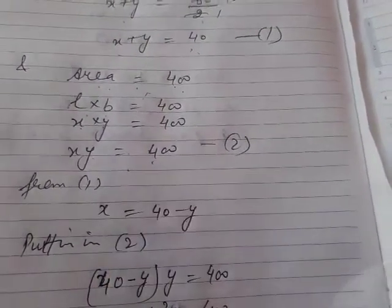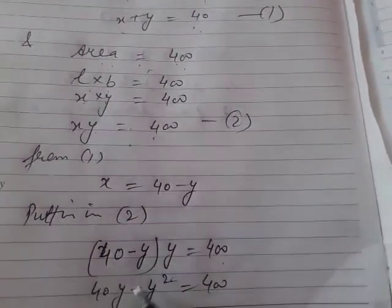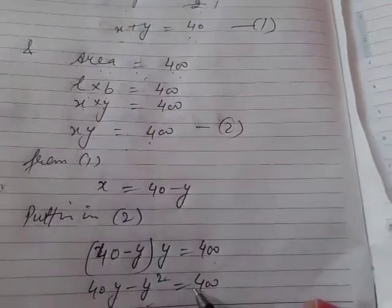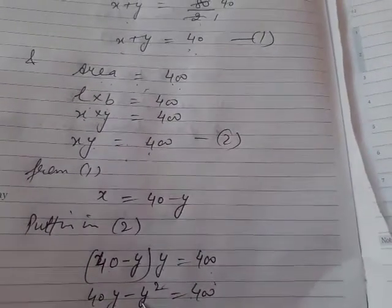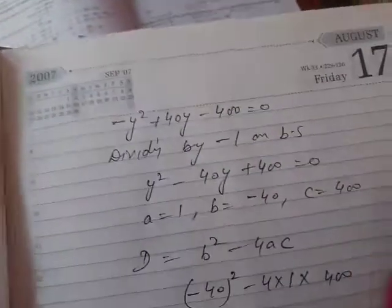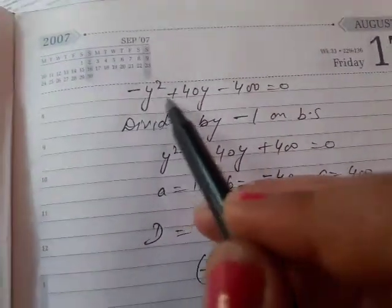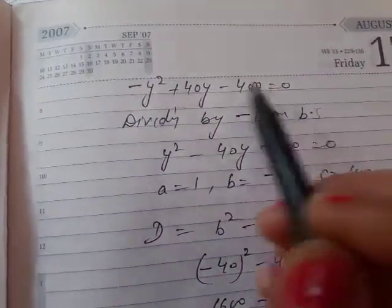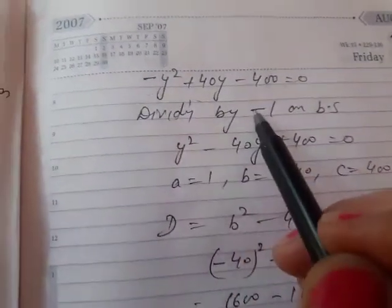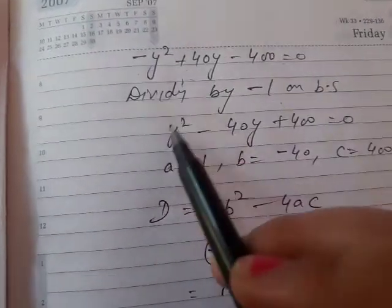40 minus y into y is equal to 400. 40y minus y squared equals 400. Taking 400 to left hand side: minus y squared plus 40y minus 400 equals 0. To keep y squared positive, we divide by minus 1, so we get y squared minus 40y plus 400 equals 0.